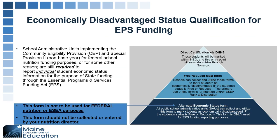There is a question about whether a field in Synergy is updated for state reporting for the alternate form. We do not currently have a field to identify students as economically disadvantaged using the alternate economic status form. However, we are looking at adding that in the future. This year, we are asking districts to retain a record of students identified as economically disadvantaged using this form, and we will be asking for that data later in the school year.